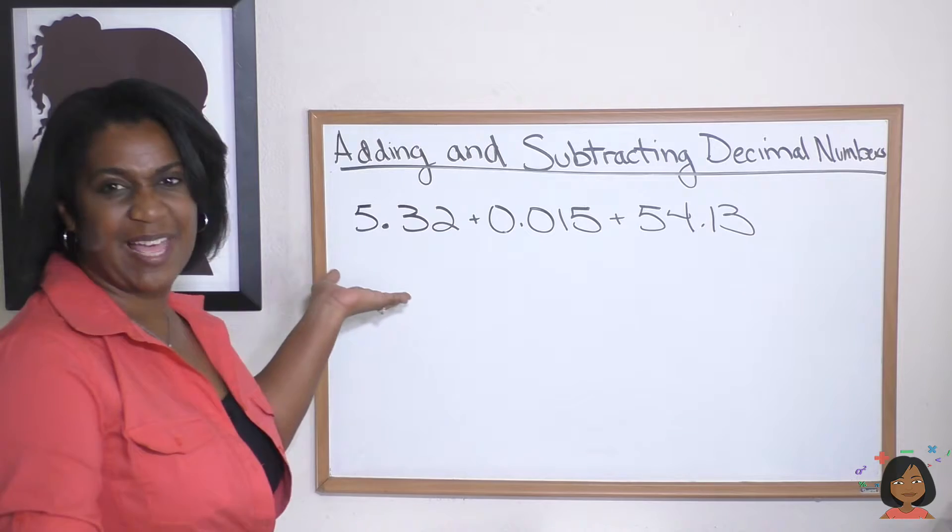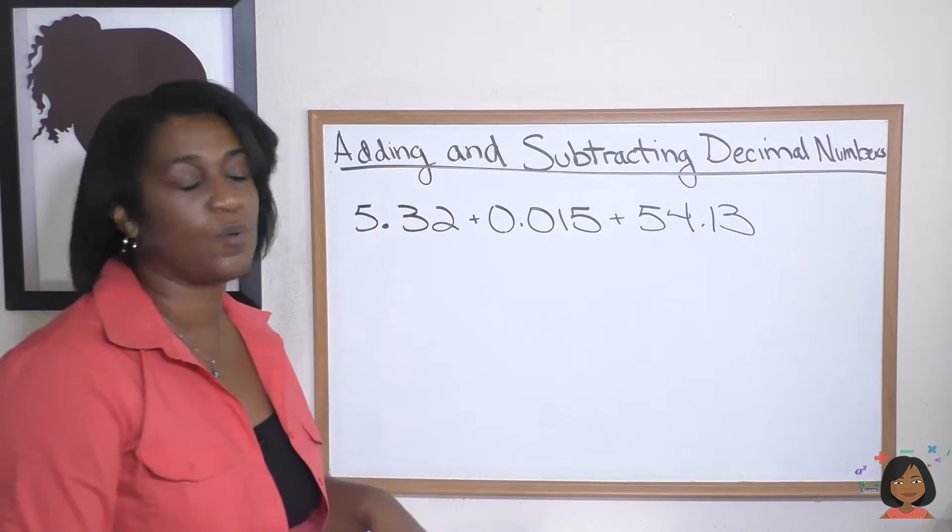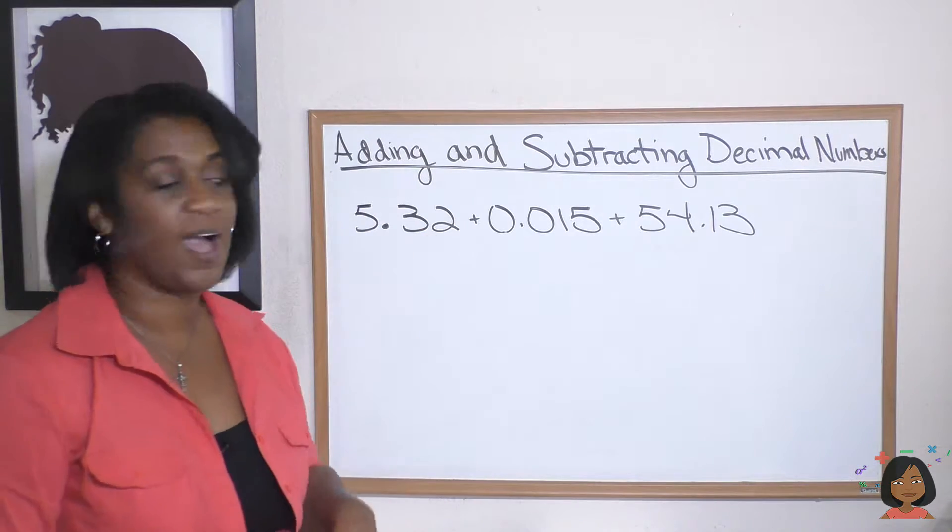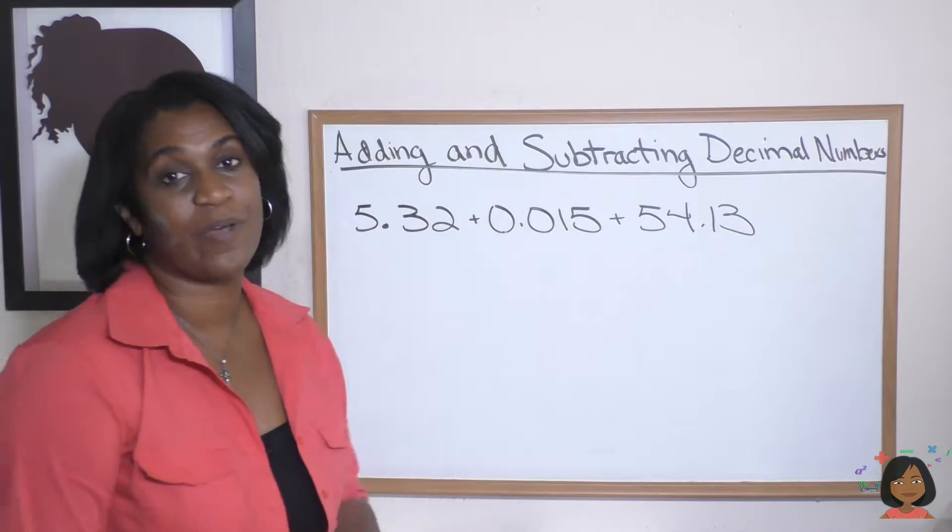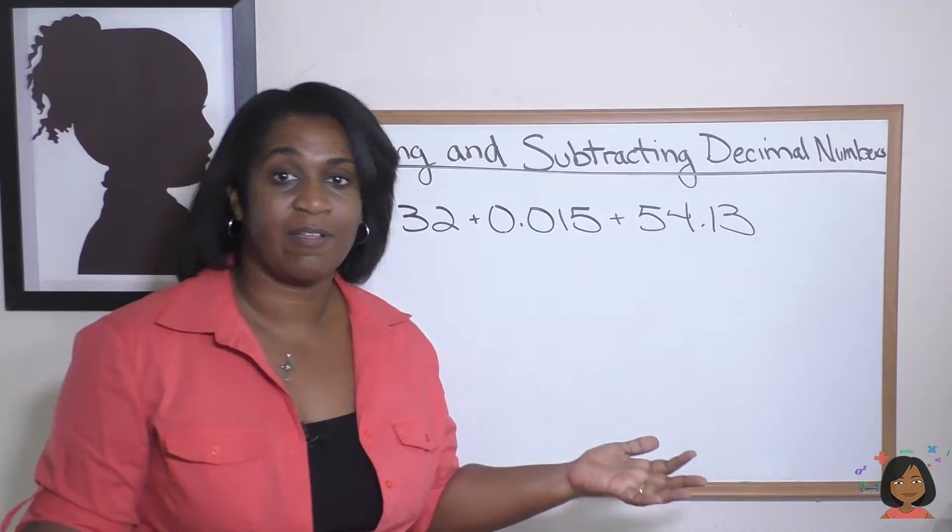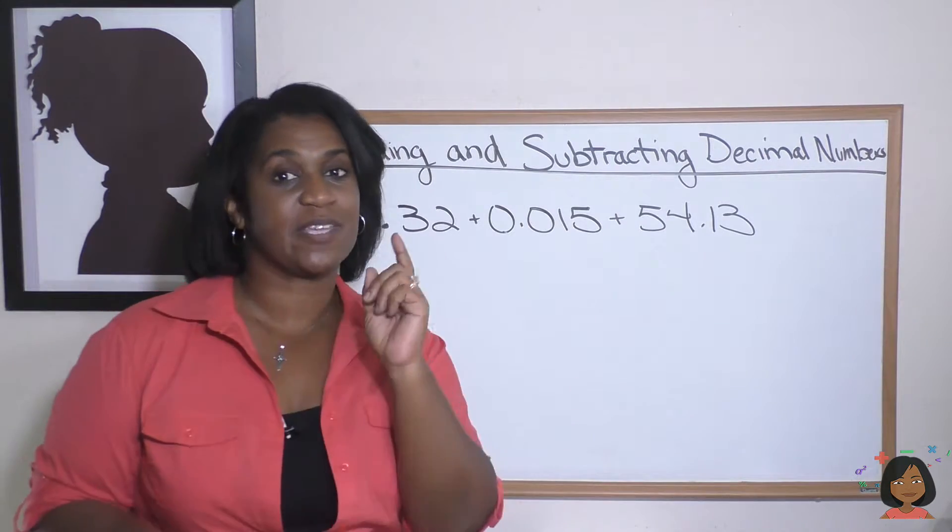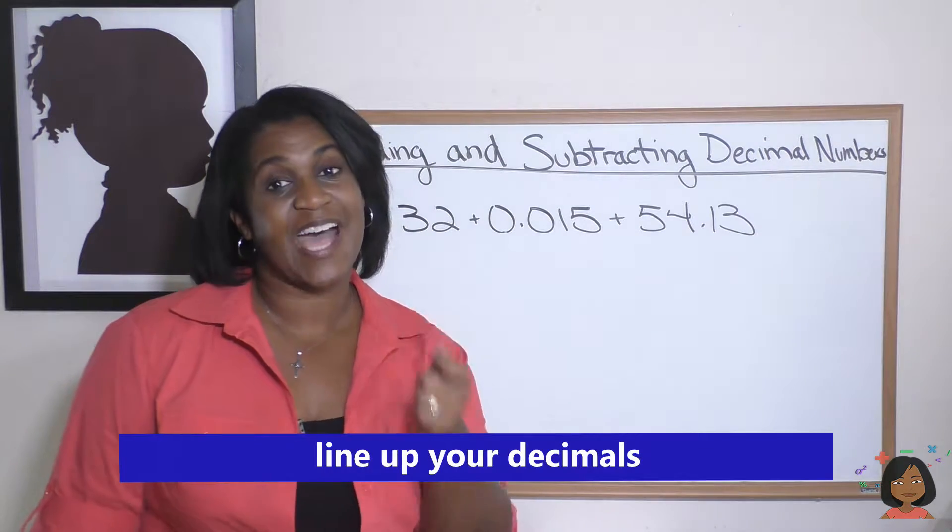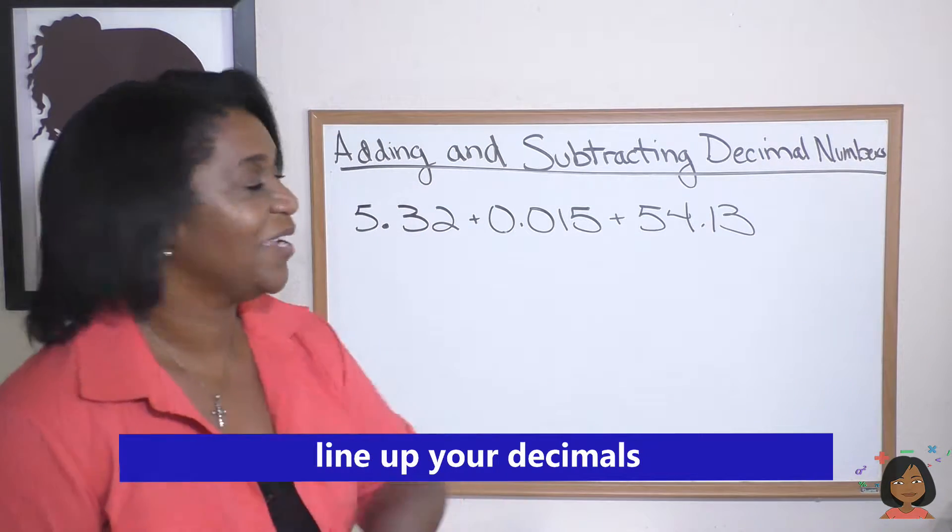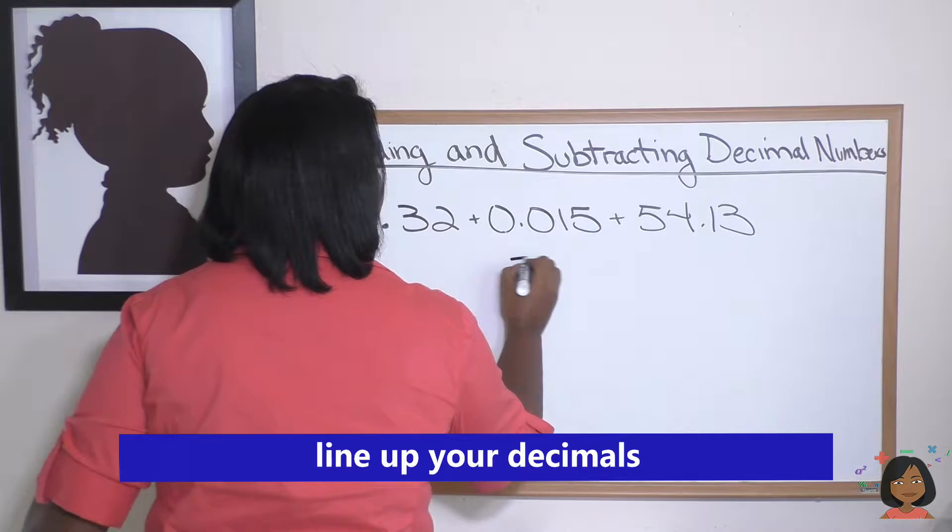So I have some numbers for you here: 5.32 plus 0.15 plus 54.13. We want to add them all together. There is only one rule you need to keep in mind here: that is, line up your decimals.